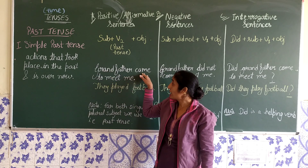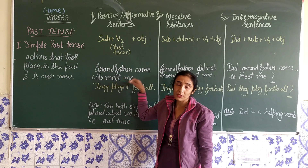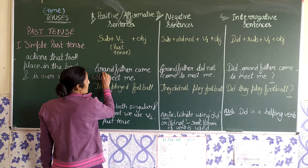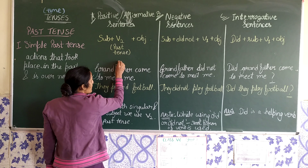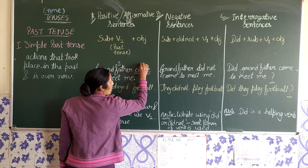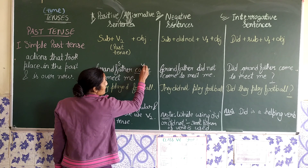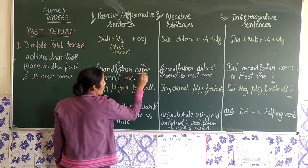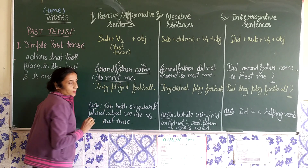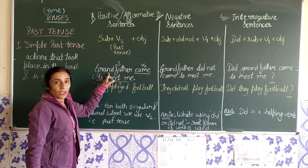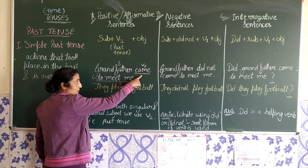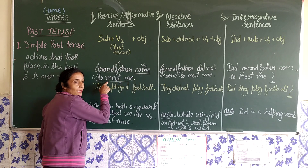You can understand this with an example: 'Grandfather came to meet me.' In this, grandfather is the subject, 'came' is the verb — this is the verb's second form — and 'to meet me' is the object.